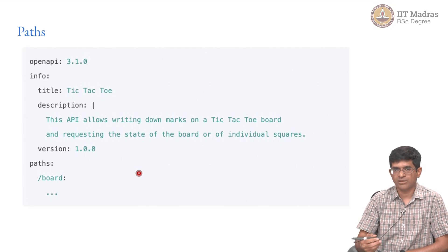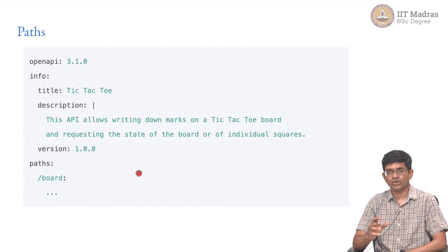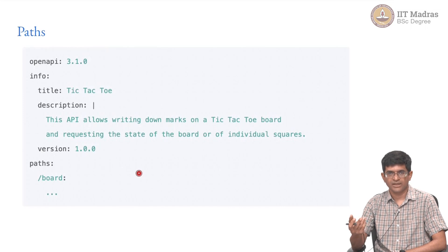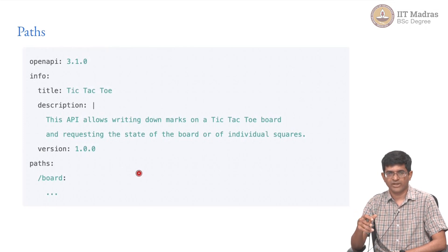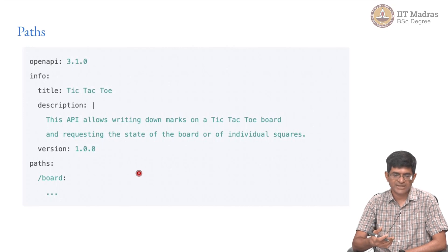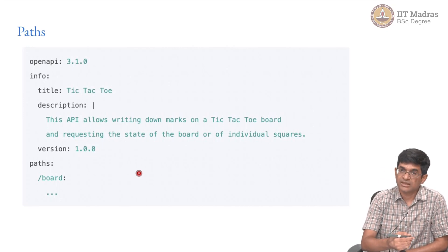This is interesting because if you think about it, this API is only encoding the functionality of the game. It tells you that, for example, you can create a new game, you can put an X or an O in a specific location, you can retrieve the state of the board, and you can find out who won. It does not tell you anything about how to display the board, how to make an X or O in a specific location, or how to decide whose turn it is — none of that information is specified as part of the API. That separation is very much there — what we are trying to do is tell you information about the functionality.